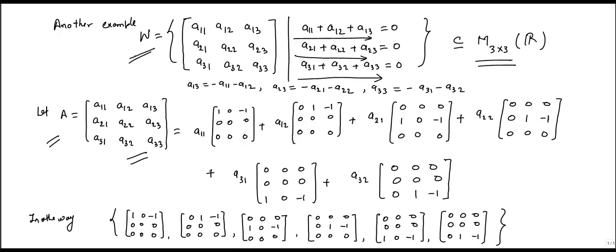And if we see clearly, entry a13 can be generated by entries a11 and a12, because of this first condition.